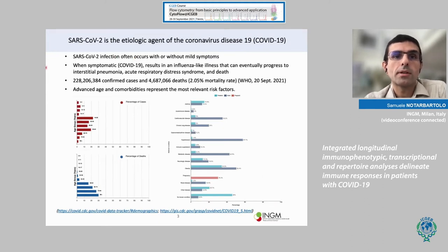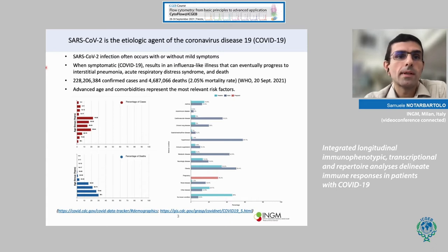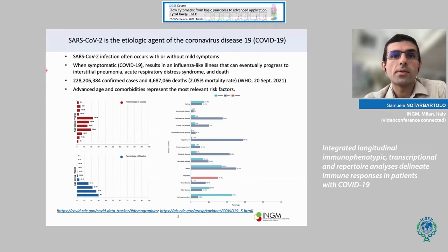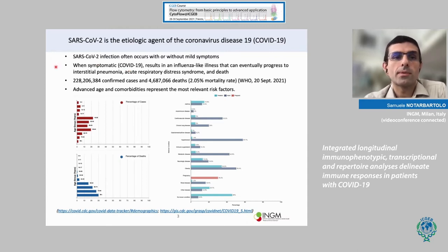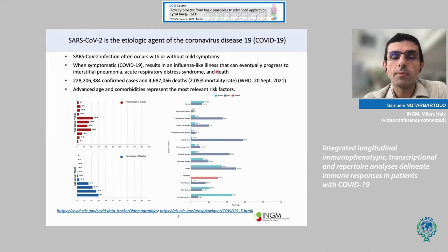SARS-CoV-2 infection normally occurs without symptoms or with mild symptoms. When it is symptomatic, it causes coronavirus disease COVID-19, which is an influenza-like illness that can eventually progress to interstitial pneumonia, acute respiratory distress syndrome, and eventually death. The mortality rate is around 2%, and the two most relevant risk factors are advanced age — people over 50 years are more susceptible to severe disease and death.